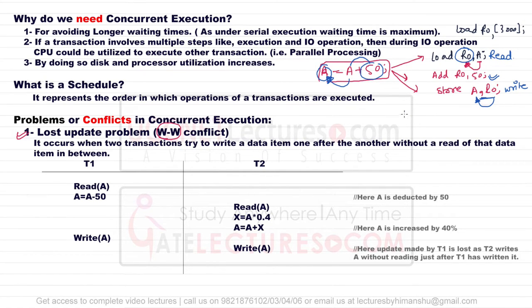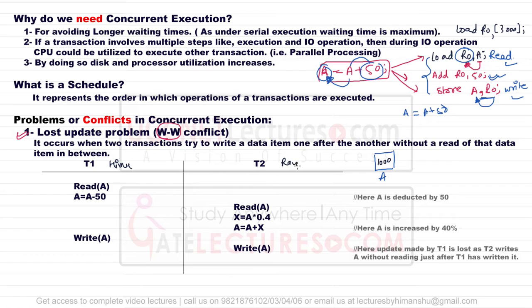For every transaction, even A = A + 50 is broken into three steps: read, operate, and write. Assume we have an account containing 1000 rupees initially. Transaction T1 represents Himanshu and T2 represents Ravi. T1 wants to subtract 50 rupees from the account, so first it reads the value of A — this value is stored in register R0, and the register now knows the value of A is 1000.